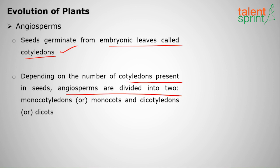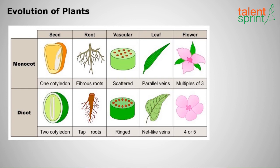Seeds in angiosperms germinate from embryonic leaves called cotyledons. Depending on the number of cotyledons, angiosperms are divided into monocotyledons (monocots) and dicotyledons (dicots). Monocots have a single cotyledon, fibrous roots, scattered vascular bundles, parallel leaf veins, and flower parts in multiples of three. Dicots have two cotyledons, tap roots, ringed vascular bundles, net-like veins, and flower parts in fours or fives.